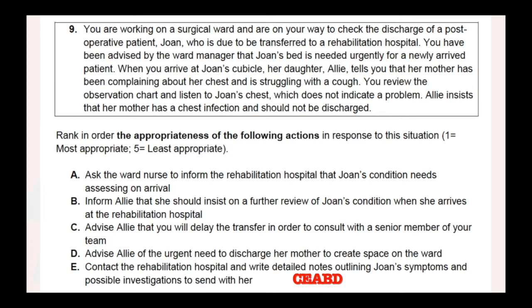Then we have B and D left. Option B says: inform Ali that she should insist on a further review of Joan's condition when she arrives at the hospital. Option D is to advise Ali that you urgently need the bed her mother is on — that's absolutely always a wrong option. Never tell patients that you need their bed. That's absolutely distressing and doesn't answer any of the problems. Telling her to insist on a review would be okay, but going officially as a handover is much better. B would still be more appropriate than D.